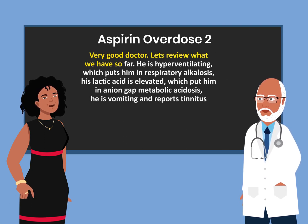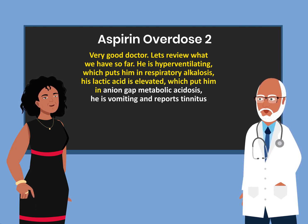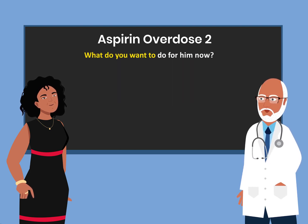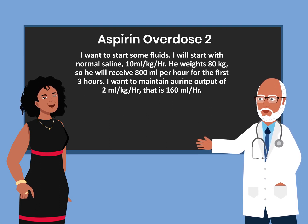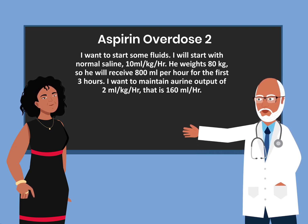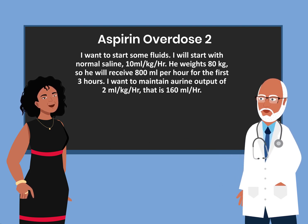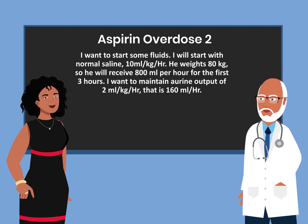Let's review: he is hyperventilating, putting him in respiratory alkalosis; his lactic acid is elevated, putting him in anion gap metabolic acidosis; and he is vomiting and reports tinnitus. For treatment, I want to start fluids — normal saline at 10 mL per kg per hour. He weighs 80 kg, so he will receive 800 mL per hour for the first 3 hours, maintaining a urine output of 2 mL per kg per hour, which is 160 mL per hour.